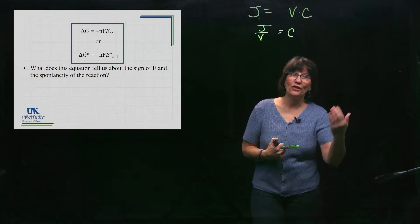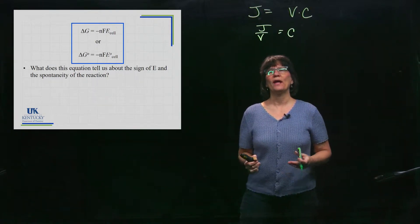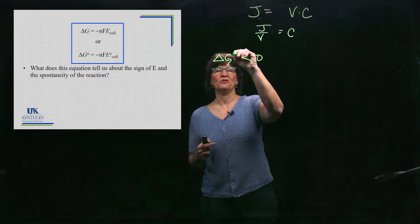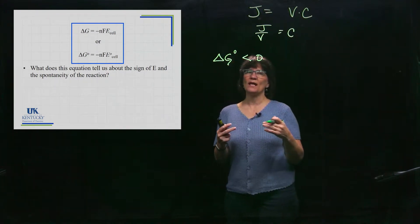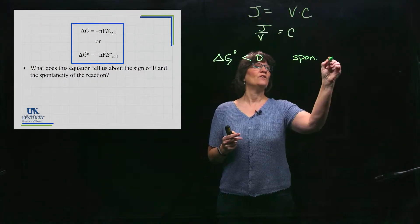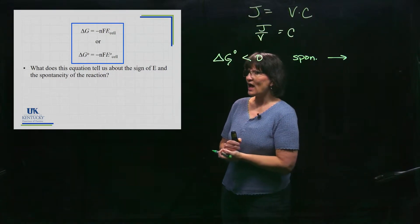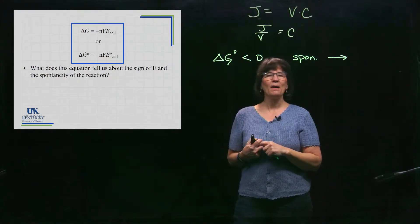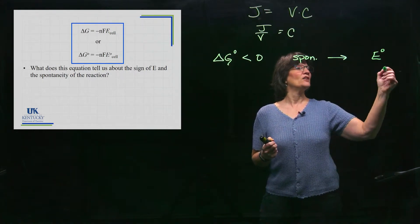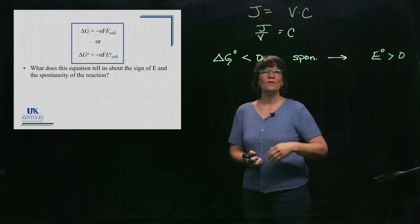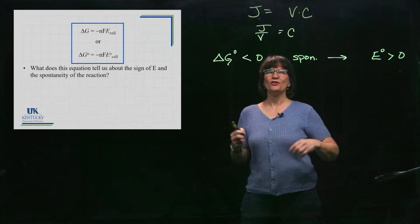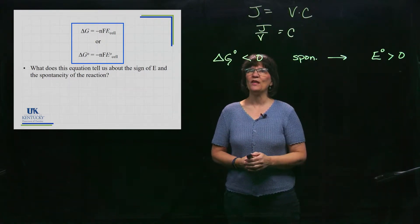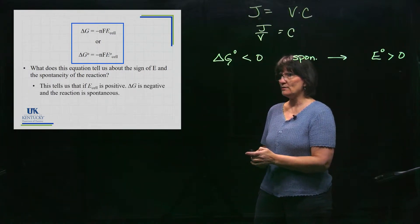What does this equation tell us about the sign of E when a reaction is spontaneous? Think back: when ΔG is less than zero, the reaction is spontaneous in the forward direction. So if standard ΔG° is less than zero, what must E° be? Looking at the equation with that minus sign, E must be greater than zero. Whenever you measure voltage in a voltaic cell running spontaneously, it will have a positive voltage.